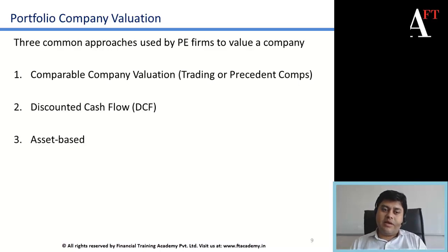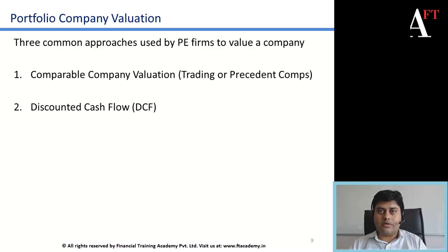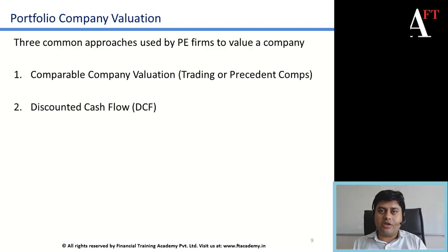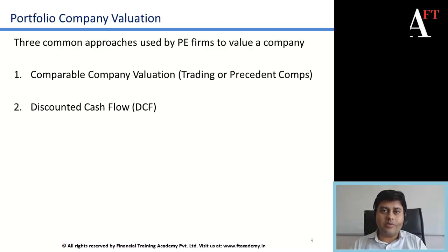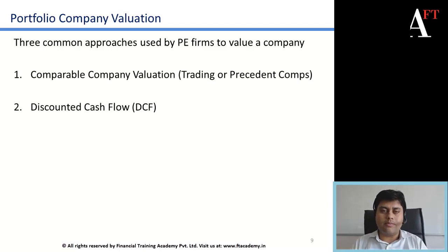The next method is the discounted cash flow method — a traditional approach where you project the cash flows of the target company over a 5-year, 7-year, or 10-year period, discount them at a certain discount rate to get the present value, and also estimate the terminal value. Together, these give you the discounted cash flow valuation of your portfolio company.